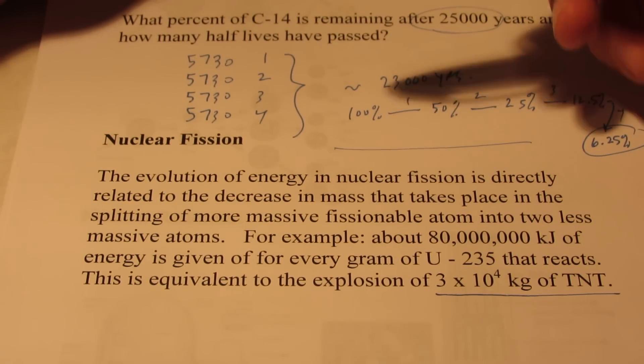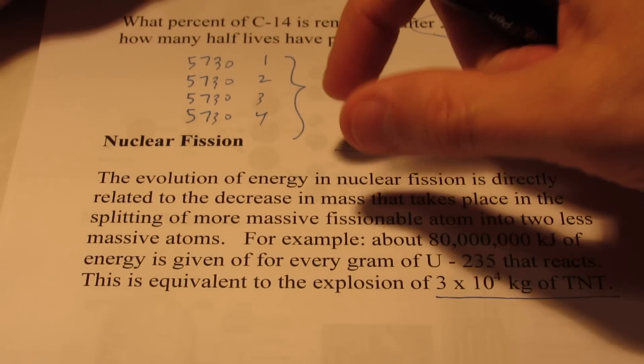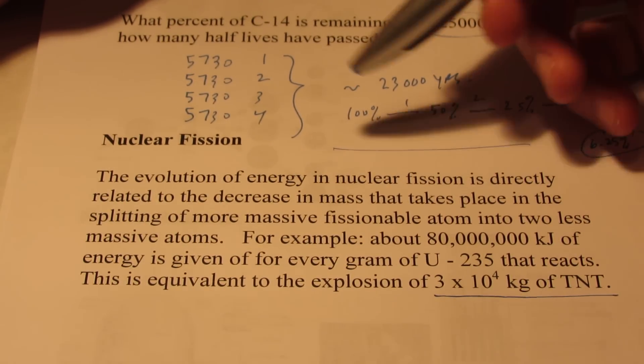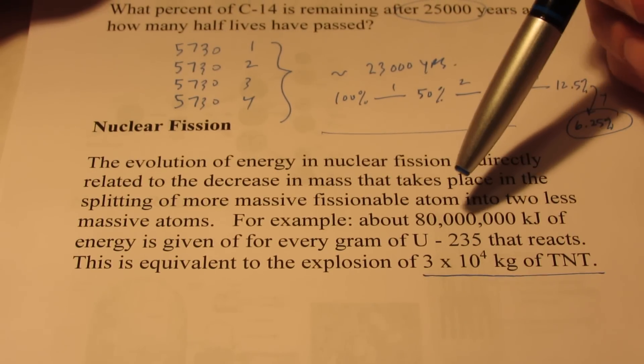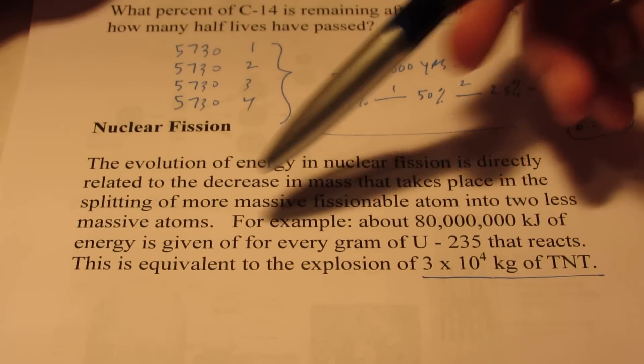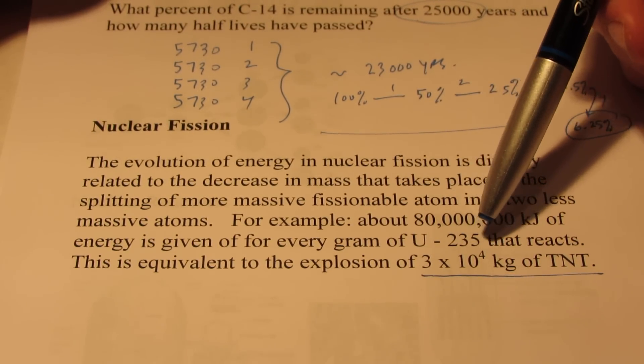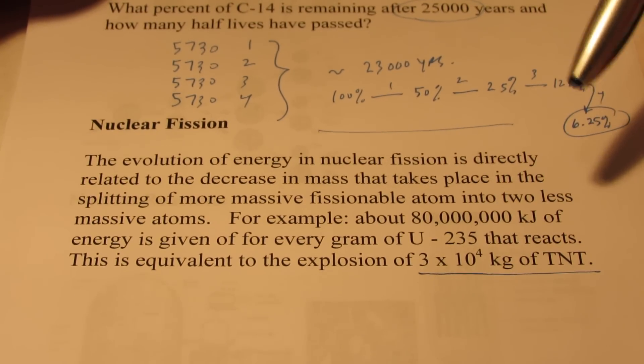Nuclear fission is a process whereby the atom is split, and in the process a tremendous amount of energy can be gained from doing so. For example, we had said earlier about 80 million kilojoules of energy is given off for every kilogram of fissionable uranium, which is uranium-235, that can react.